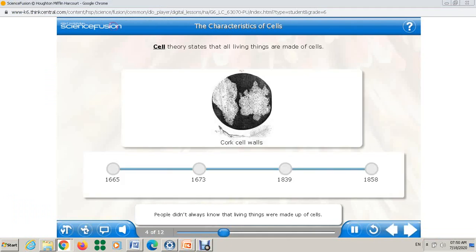People didn't always know that living things were made up of cells. It took scientists centuries to come up with what we now call cell theory. Cell theory states that all living things are made of cells. Click the timeline to learn how cell theory was developed.